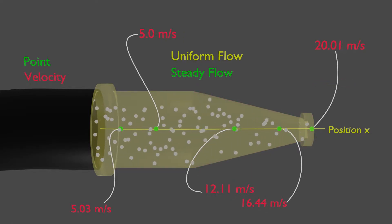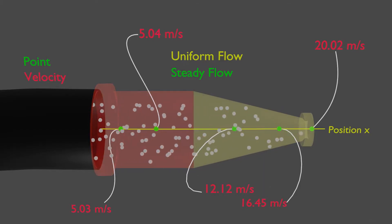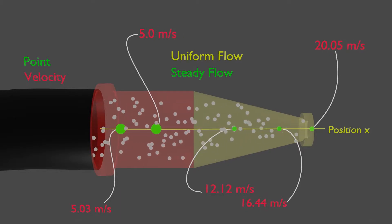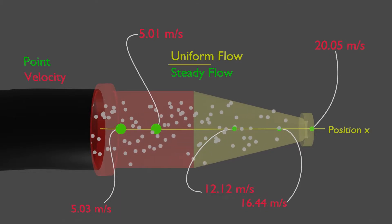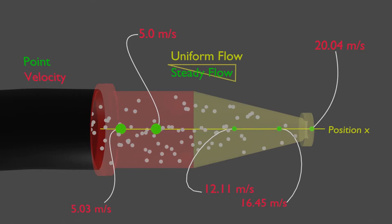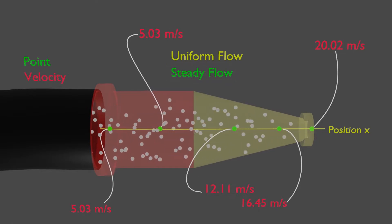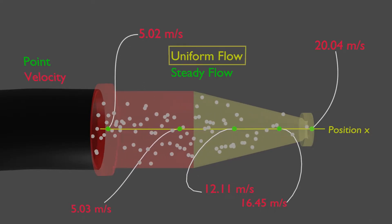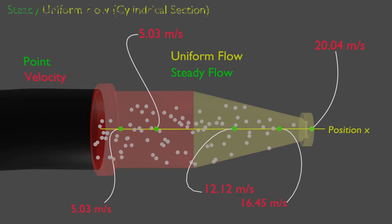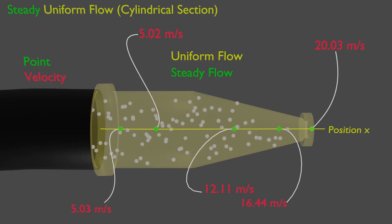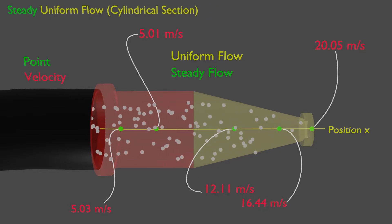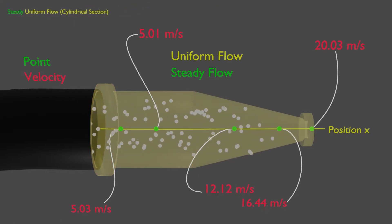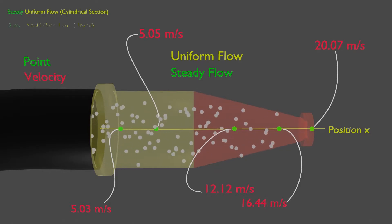Now, again take a look at the cylindrical section of this nozzle. Velocity is again not changing at this point with time, so a steady flow. And velocity is also not changing from one position to another, so a uniform flow. This gives the combination of steady uniform flow. So on a cylindrical section, water has steady uniform flow. But on conical section, the flow is steady but not uniform.